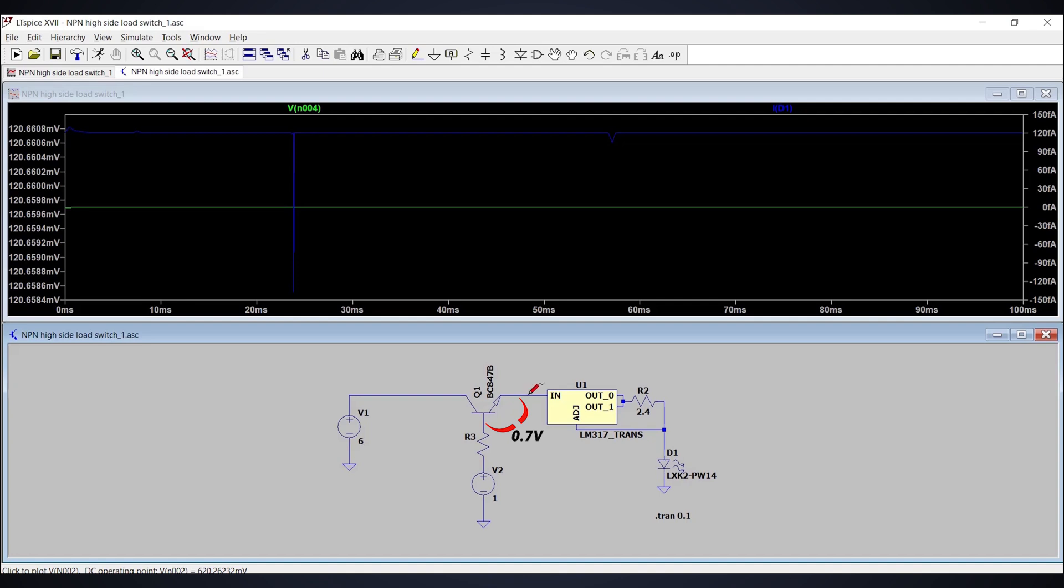In our case, the emitter is not connected to the ground. It is floating. So even if we give 1 volt as a base voltage, it will not turn on because the base to emitter voltage difference is not as per the minimum requirement which is at least 0.7 volts.